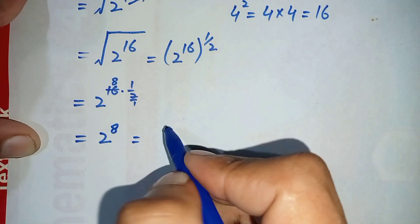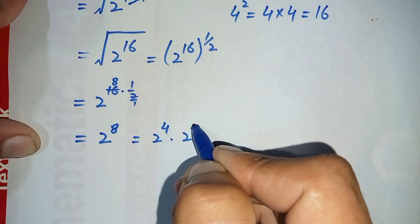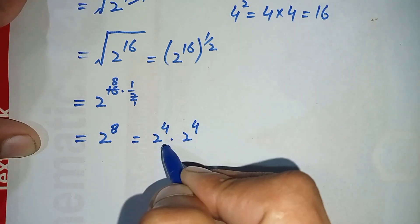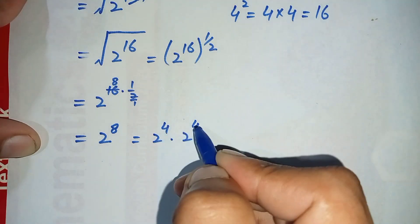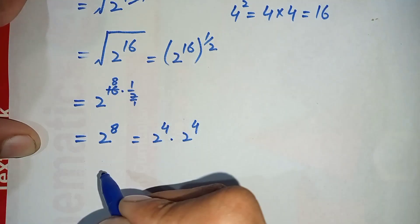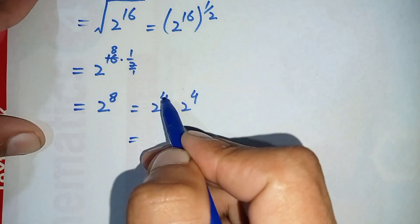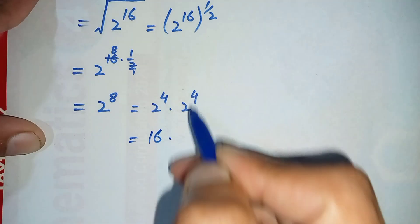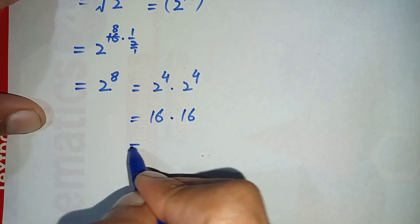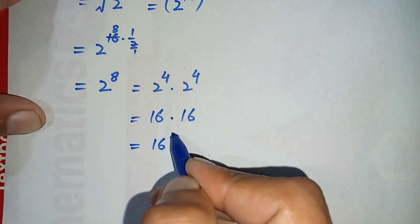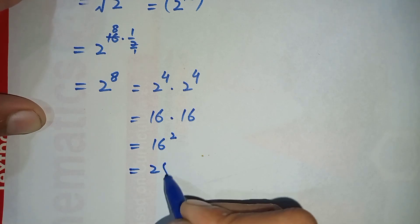Next, we can write 2 raised to power 8 as 2 raised to power 4 times 2 raised to power 4, because multiplying these keeps the same base and adds the powers to give 2 raised to power 8. Now 2 raised to power 4 is 16, so we have 16 times 16, which is 16 squared, equal to 256.